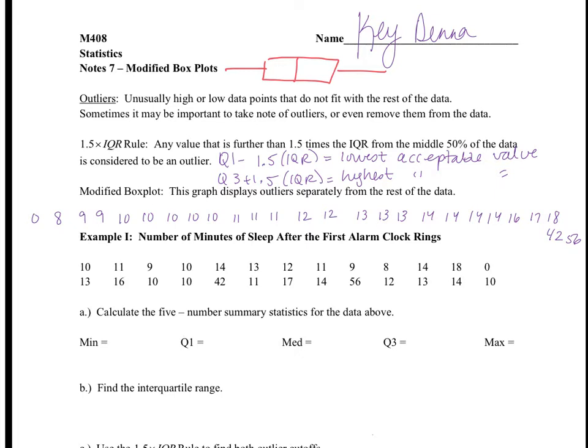However, sometimes you have a really high or really low score which can cause your whisker to be extremely long. For example, look at this data set that we see below. This data represents the number of minutes of sleep after the first alarm clock rings. And if you look, the majority of the scores are clustered between 8 and 18.